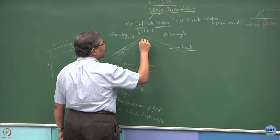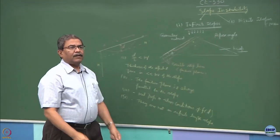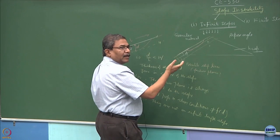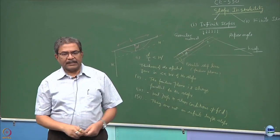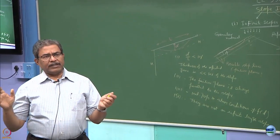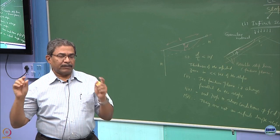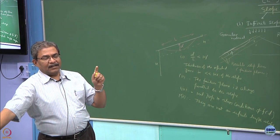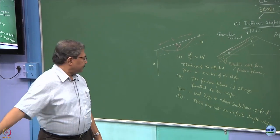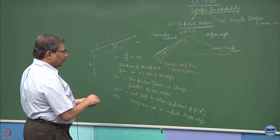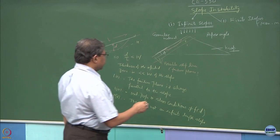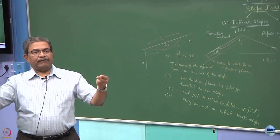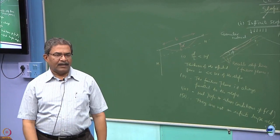If more than one stratum is present, everything is going to be of uniform characteristics — each layer has to be of uniform characteristics. The boundary of each layer is going to be parallel to the ground. Suppose strata 1, 2, and 3 are present; within each stratum, the material properties remain the same. Overall, the slip surface or failure plane is always parallel to the slope surface. In case of more than one stratum, each stratum has uniform characteristics and the boundary of each layer is parallel to the ground surface.